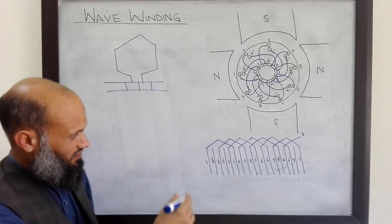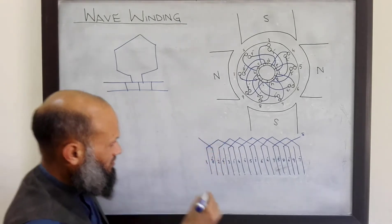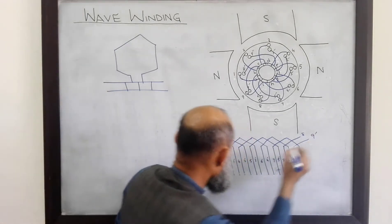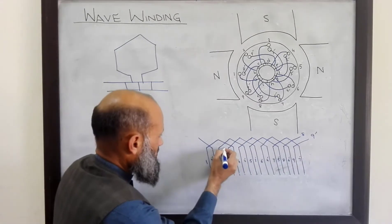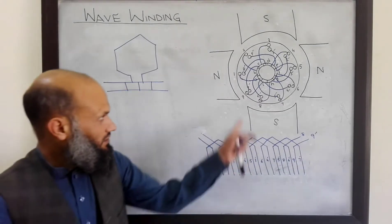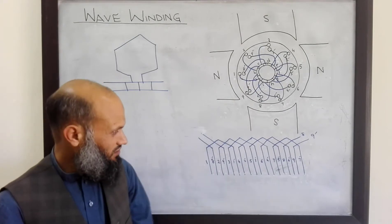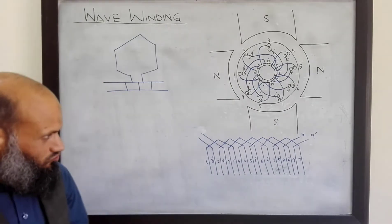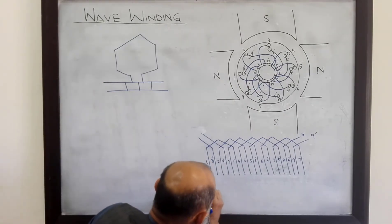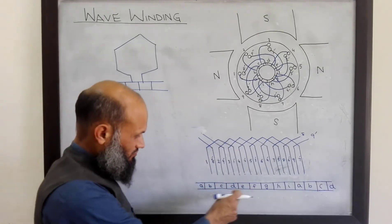Since we have cut it open, this connection is not visible over here. And nine is connected to nine-dash. On the front end, these coils are connected to commutator segments. There are nine commutator segments, so let me draw these nine commutator segments.